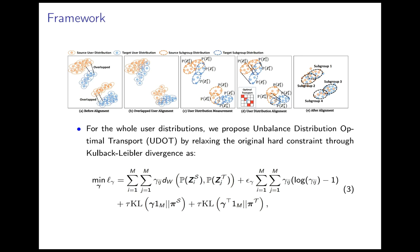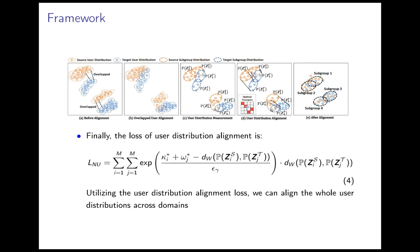UDOT is proposed by relaxing the original hard constraint. Finally, the loss of user distribution alignment is shown as LR.